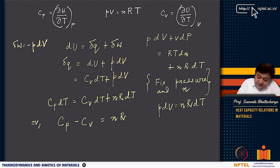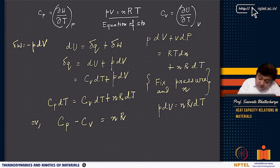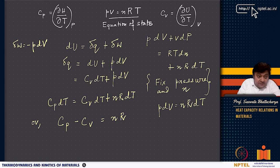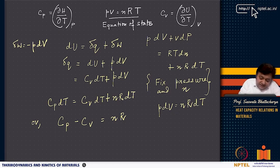For an ideal gas it becomes pretty easy because you have the equation of state. The reversible work is minus P dV, and from the first law dU equals delta Q plus delta W. So delta Q equals dU plus P dV, since delta W is minus P dV with work done on the system being positive.